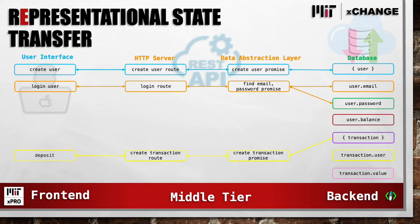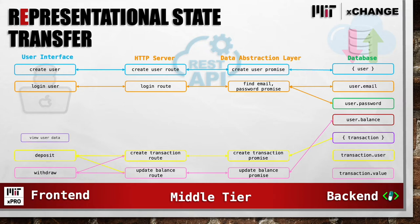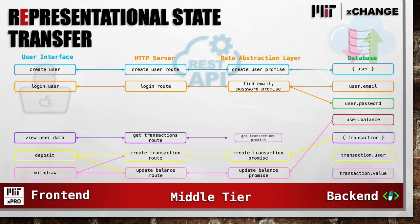Making a deposit will also use the updateBalance route, followed by the updateBalance promise, which writes to the user balance in the database. Making a withdrawal will also use the createTransaction route as well as the updateBalance route, followed by the corresponding promises to make changes to the database. Viewing user data uses the getTransactions route, followed by the getTransactions promise, which pulls in the transaction value based on the user object ID.